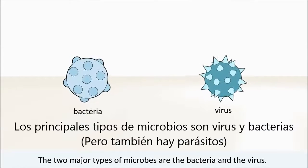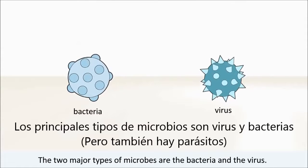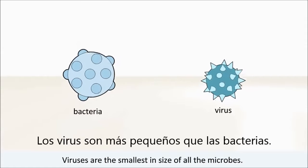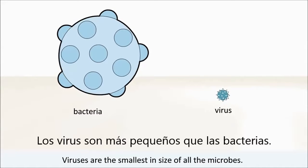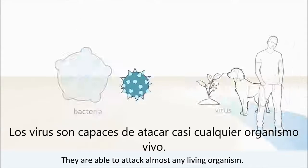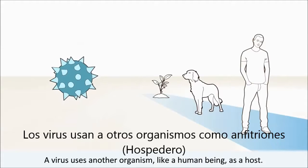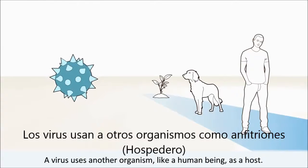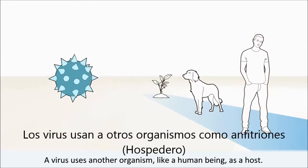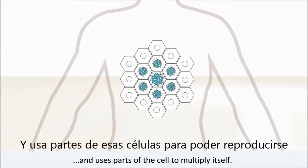The two major types of microbes are the bacteria and the virus. Viruses are the smallest in size of all the microbes. They are able to attack almost any living organism. A virus uses another organism like a human being as a host, invading a cell of the body and using parts of the cell to multiply itself.